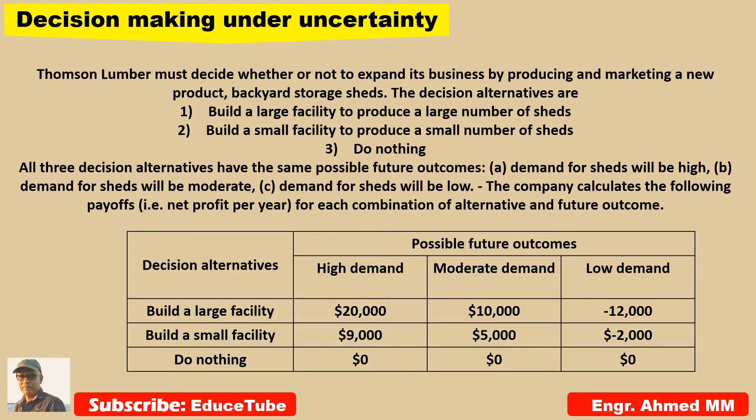In the next slide I will use Excel to find five different decision-making criteria: maximax, maximin, realism, equally likely, and minimax regret. Using Excel, we will find these decision-making criteria and then use them to make a decision.